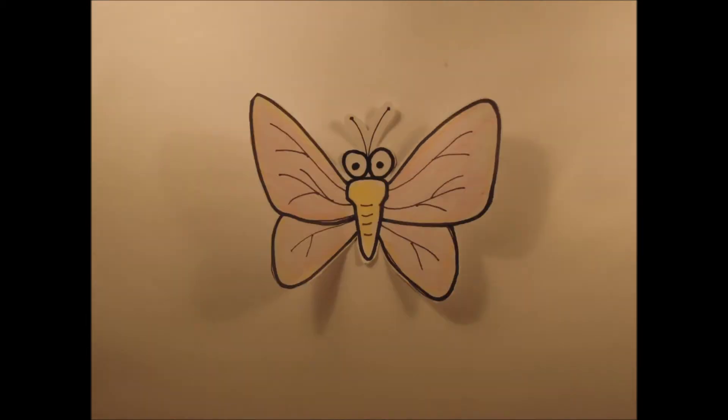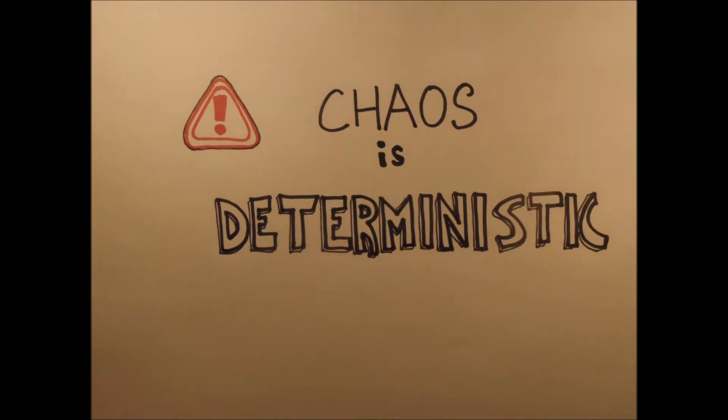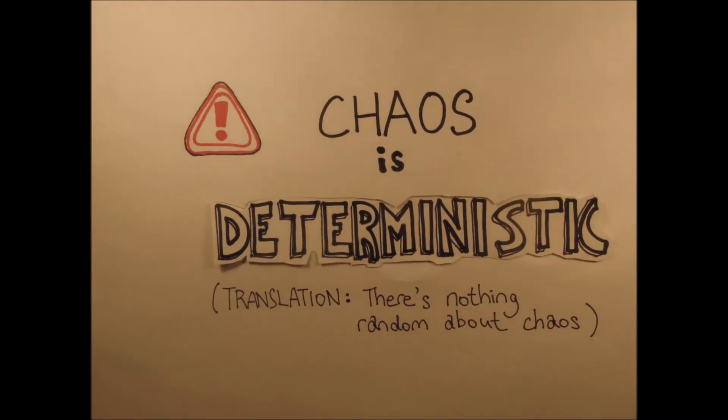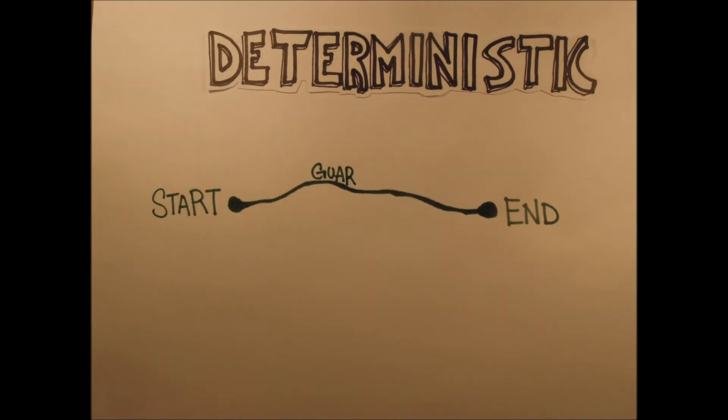At this point I'd like to emphasize one thing: chaos is deterministic, meaning that it has nothing to do with randomness. If you start at point A, you're guaranteed to end at point B.